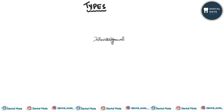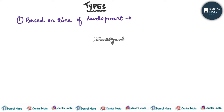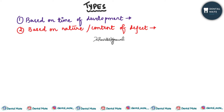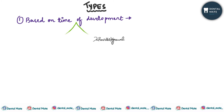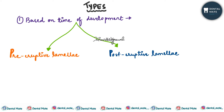If we talk about the types of enamel lamellae, it could be classified under two heads: first, based on the time of development, and second, based on the nature or content of the defect. Based on time of development, it could be of two types: pre-eruptive lamellae, formed before the eruption of the tooth, and post-eruptive lamellae, formed after the eruption of the tooth.